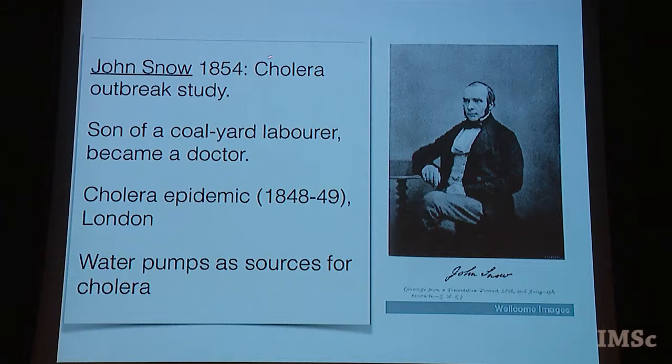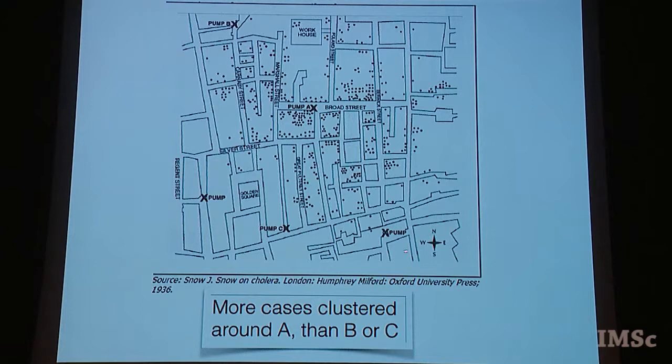One very famous study is due to British scientist John Snow in 1854, who looked at a cholera outbreak. He came from very humble beginnings — the son of a coal yard labourer who became a doctor. He established that water pumps were sources for cholera. What he did was take a map of London of the cholera-affected areas, and put a dot at the location of the home of each identified case. Here is that map — each dot is one cholera patient, referring to the place where they were staying.